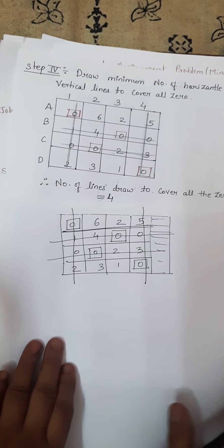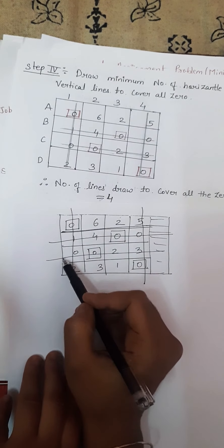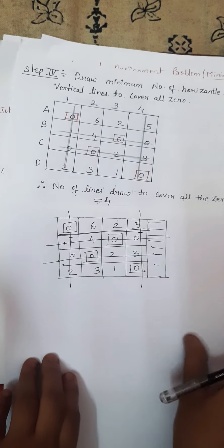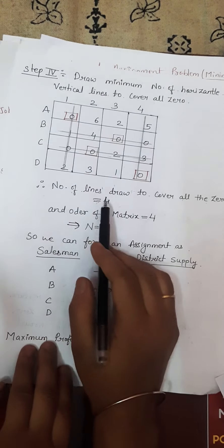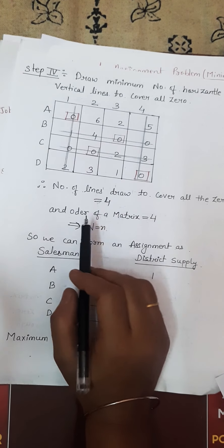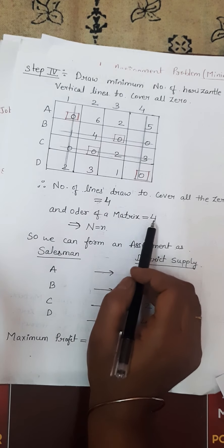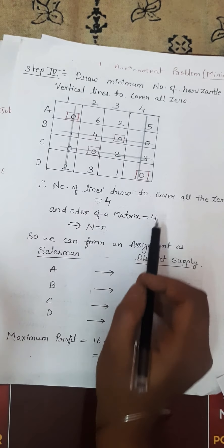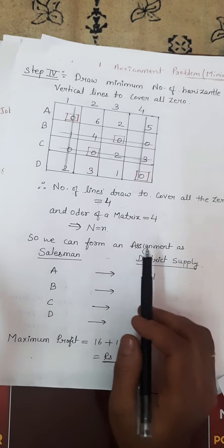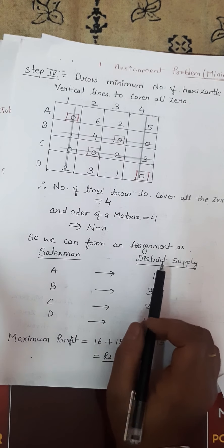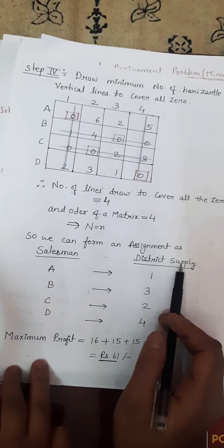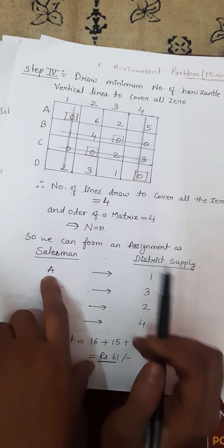Now we count the number of lines: one, two, three, and four. The number of lines drawn to cover all zeros is four, and the order of the matrix is four. Since the number of lines equals N, we have reached an optimal solution for this assignment problem.